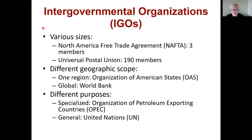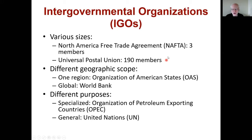To look at intergovernmental organizations we need some tools — some ways to organize and categorize them. With 400 different groups, and thousands of NGOs, not all of them will operate the same way. We can potentially organize IGOs in three different ways. We can look at them in terms of size — there's a huge range, from tiny ones like NAFTA with three member states (Canada, US, and Mexico), to the Universal Postal Union with about 190 members.